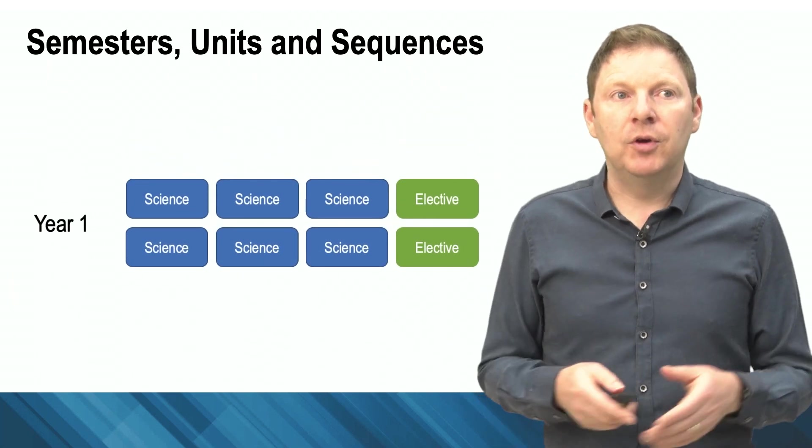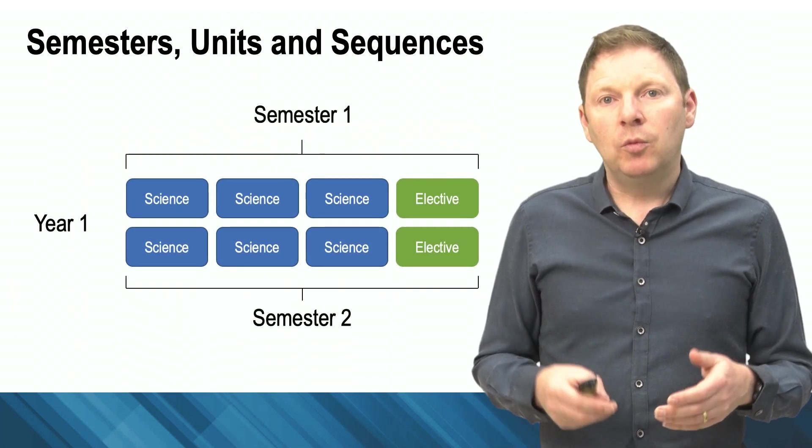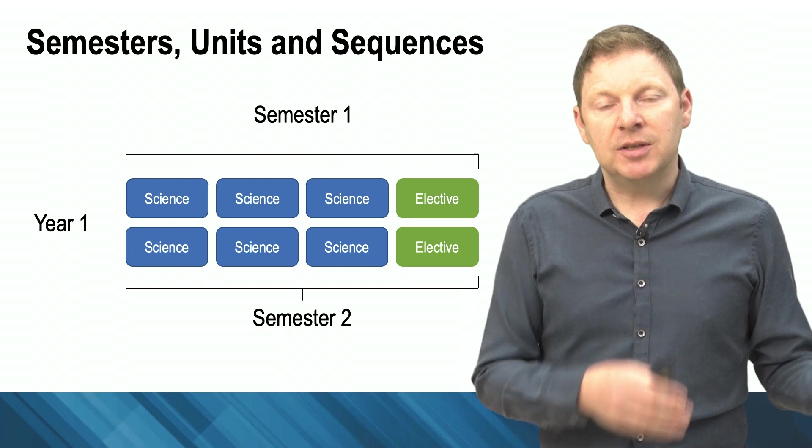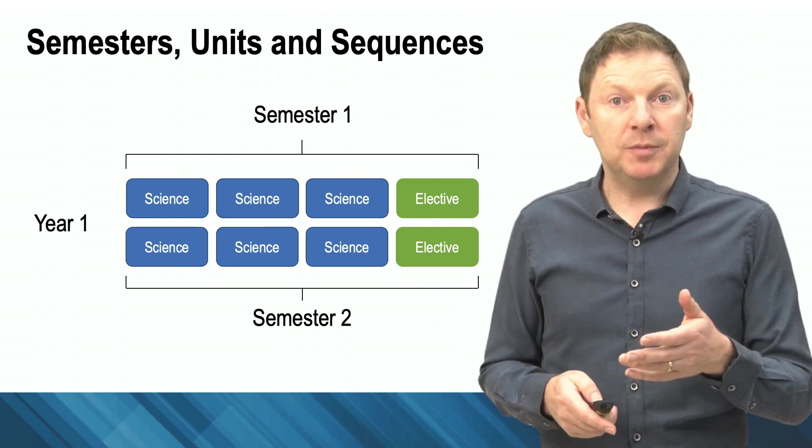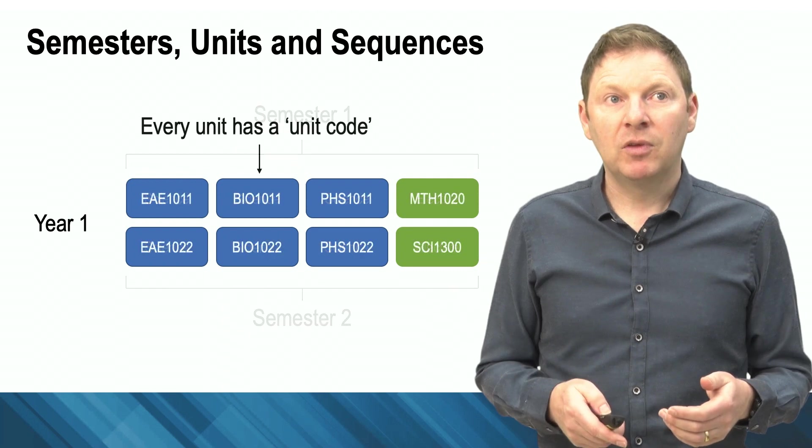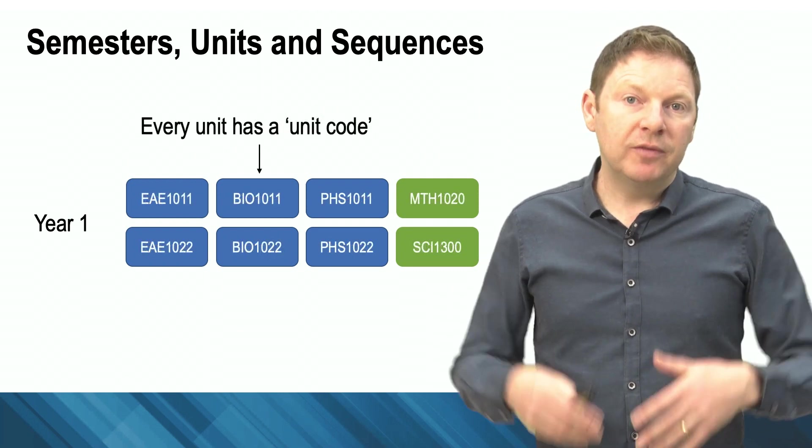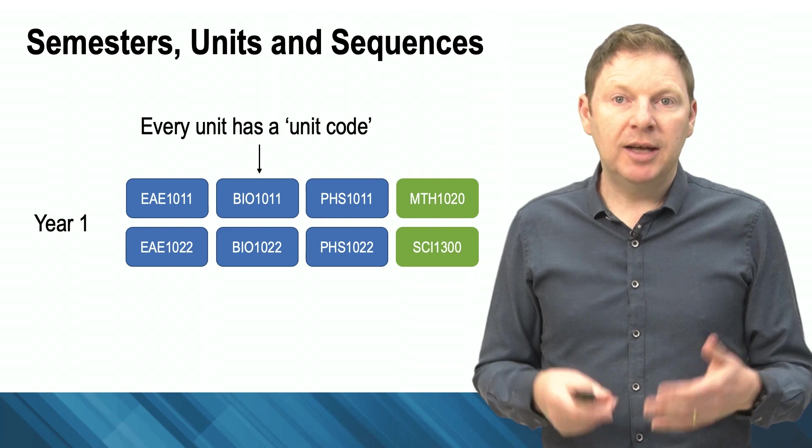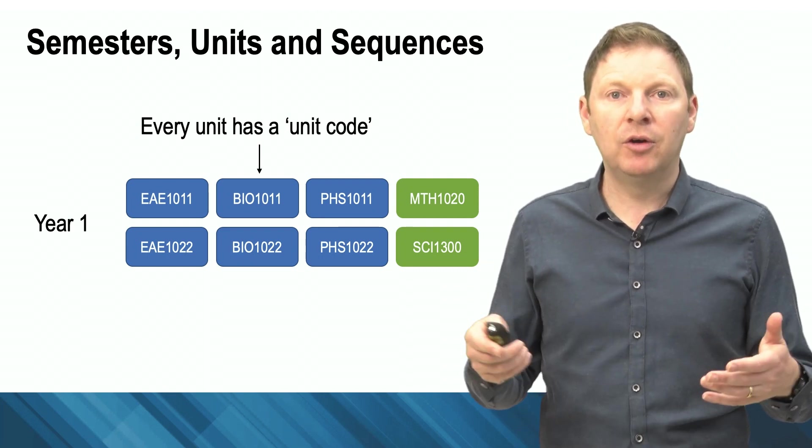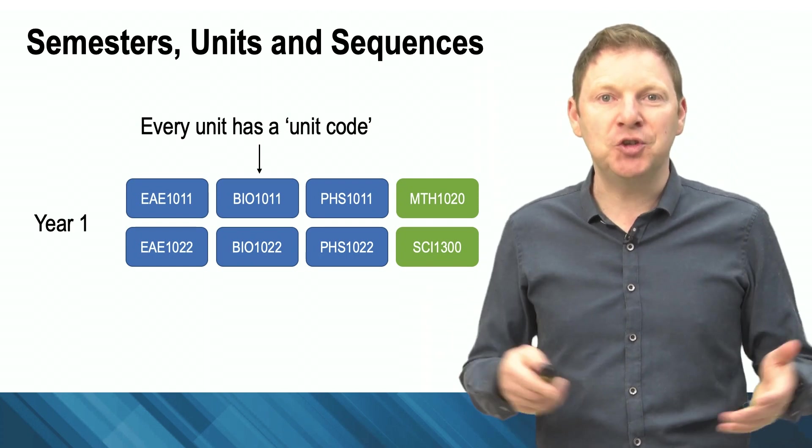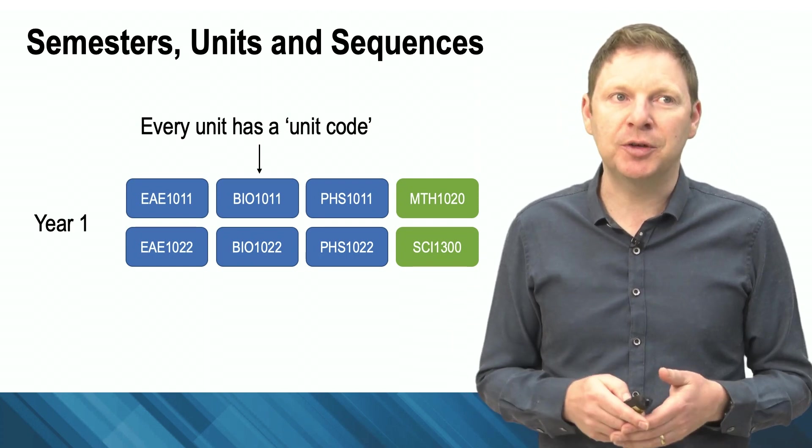Now focusing on that first year, we've got two semesters: the first half of the year and the second half of the year. You'll enroll in four units per semester. Every unit has a code. Every single subject that you'll be enrolling in has a code a bit like this. So the example I'm showing you here is BIO1011. You won't be surprised to learn that that's first year biology. Pretty self-explanatory.